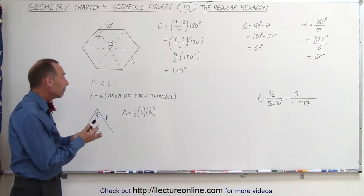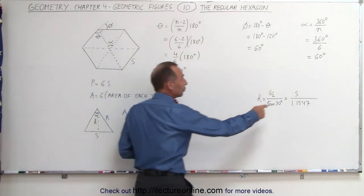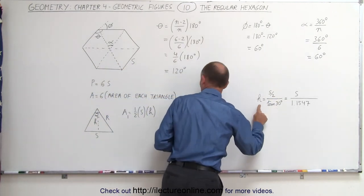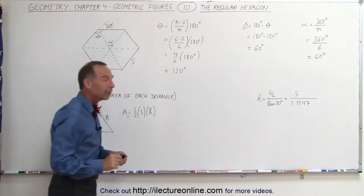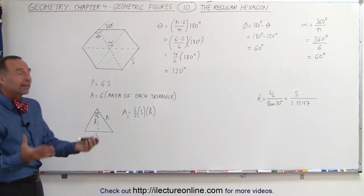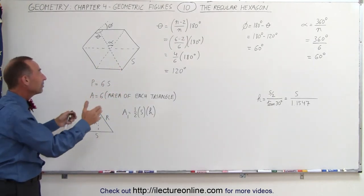So now that we know that, once we can figure out what the side is equal to, we can then find H. Now, once we find H, we can find the area of each triangle, multiplying that times 6, we find the area of the entire hexagon.